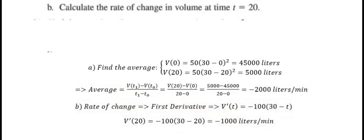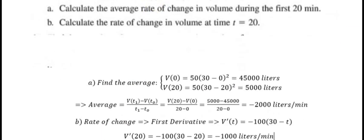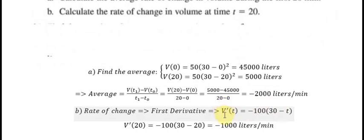We use first derivative of the function from here. First derivative of V(t) is equal to minus 100 multiplied by (30 minus t).